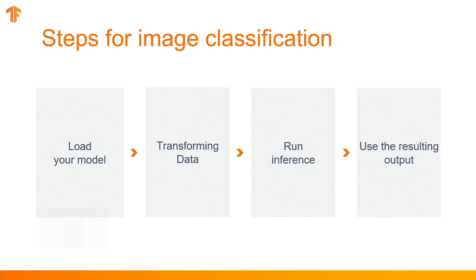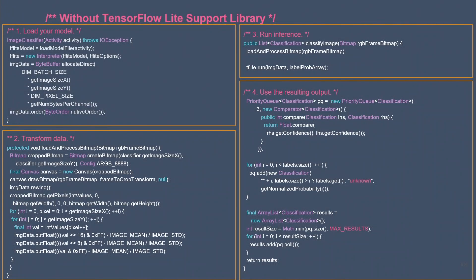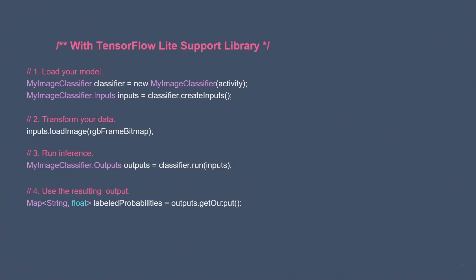Let's look at an example. These are the steps that a developer typically goes through to use a model in their app once they have converted it to the TensorFlow Lite model format. For image classification, they will likely need to write a lot of code for loading, transforming, and using the data. With the new support library, that wall of code can be reduced significantly — just a single line of code is needed for each of loading, transforming, and using the resultant classifications.